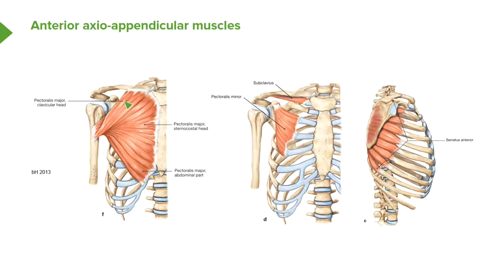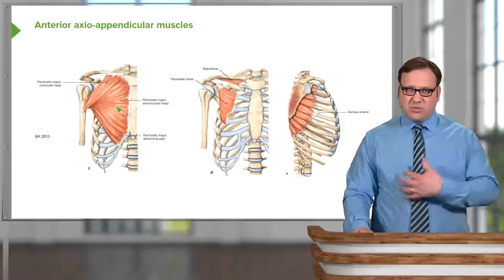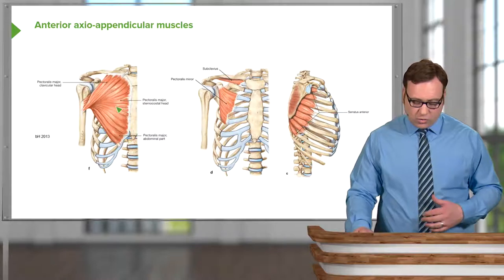The pectoralis major muscle has a number of heads — really it's got two heads. It's got a clavicular head where it's coming from the clavicle, but the axio-appendicular part of it is where it's coming from the sternum and the costal margins of the ribs. We can see this fan-shaped muscle running down towards the shaft of the humerus, where it attaches within the intertubercular sulcus, quite distally down onto the shaft of the humerus.